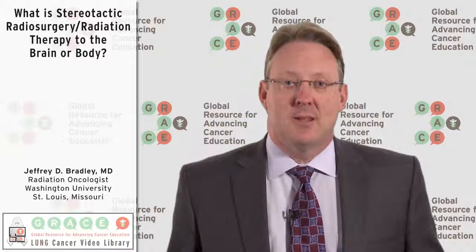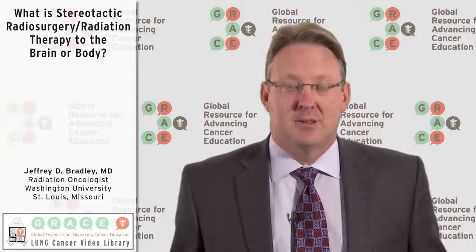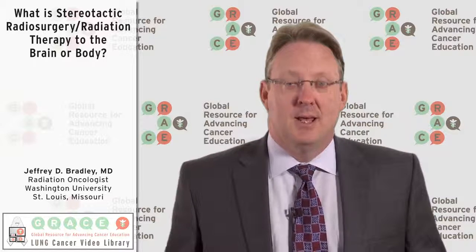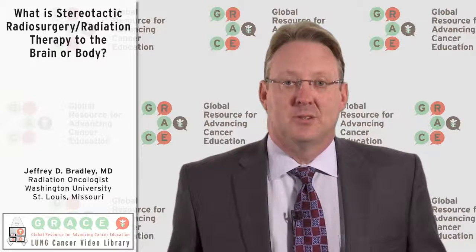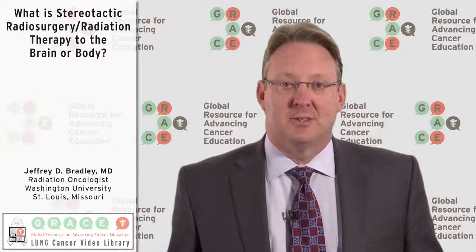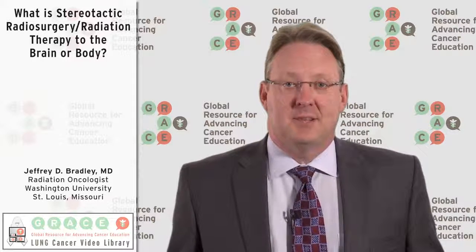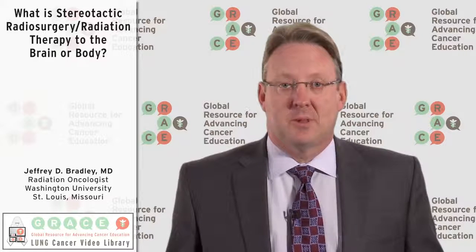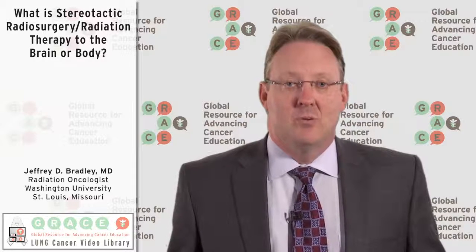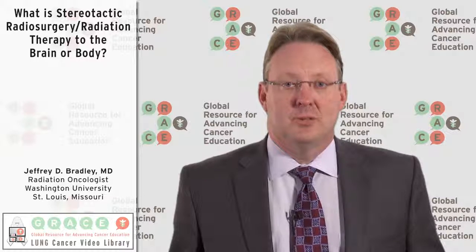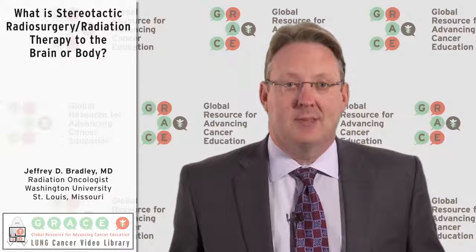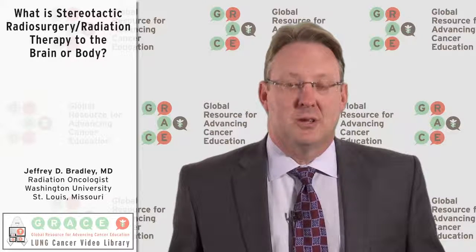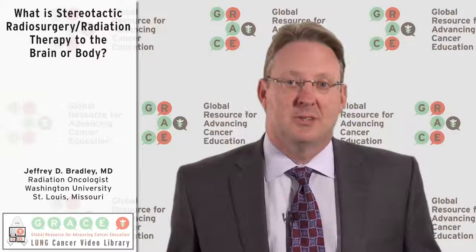Stereotactic radiation therapy or stereotactic body radiation therapy uses five or fewer fractions, so somewhere between two and five fractions. Sites for that can be brain, lung, liver, spine, and various places throughout the body where you really want to deliver a high dose that eradicates the tumor, kills the tumor cells, and do it with minimal normal tissue toxicity.